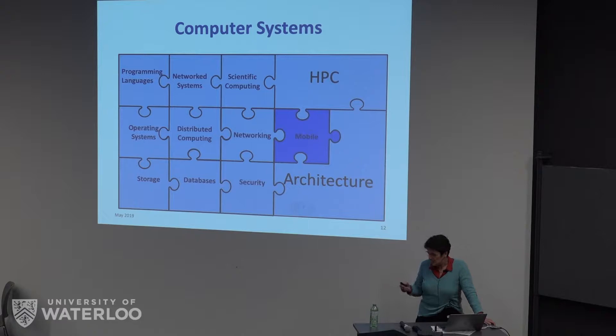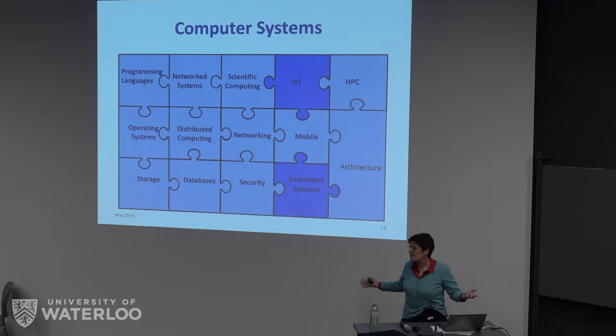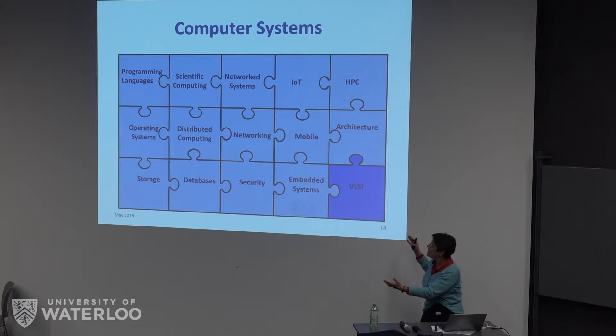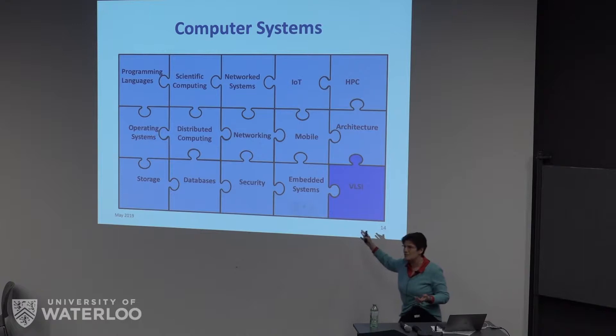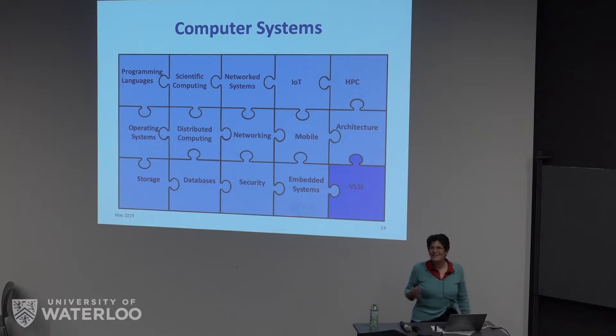Meanwhile, in architecture, mobility introduced a bunch of problems that also impacted software. Then we had the Internet of Things, embedded systems, and VLSI. So this wonderful world that started as one big happy family has really splintered into a gazillion different communities — and maybe I've even missed your favorite community. I'm going to claim that this is actually a problem.